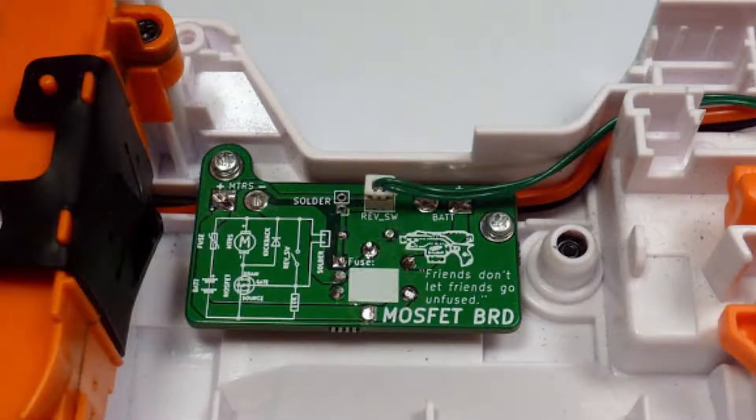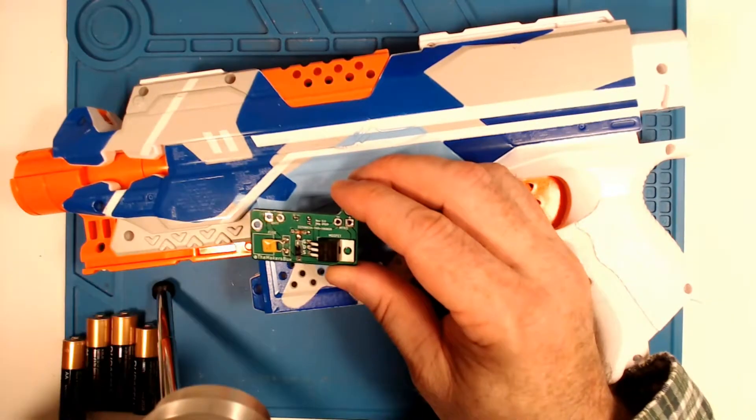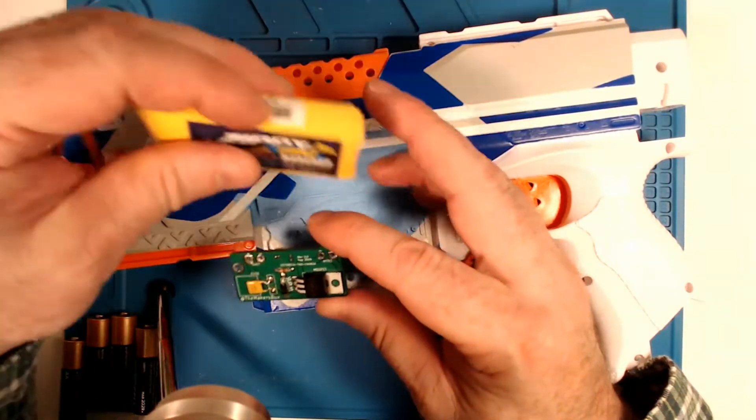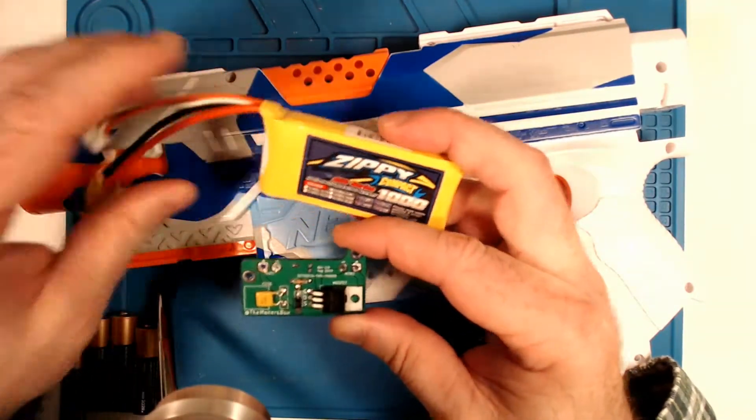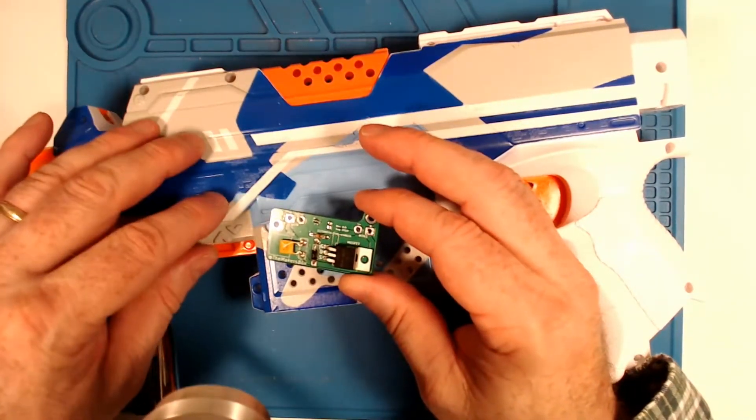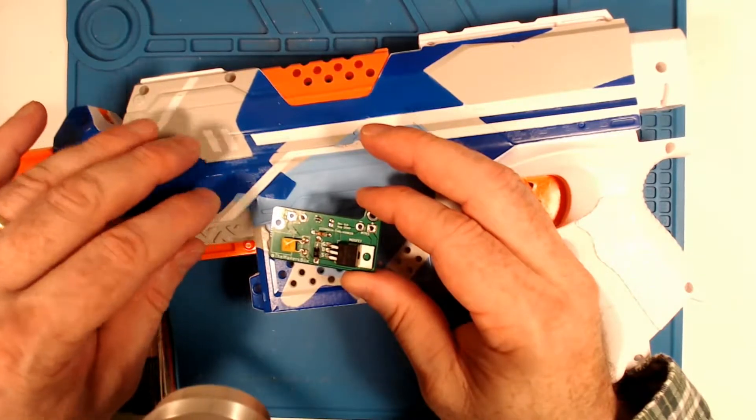The beauty of the system is you can use your double-A batteries, it'll work with your IMRs, it'll also work with your lithium packs, and additionally it'll work when you start putting your aftermarket motors in, which gives you a magnitude of increase in current draw.